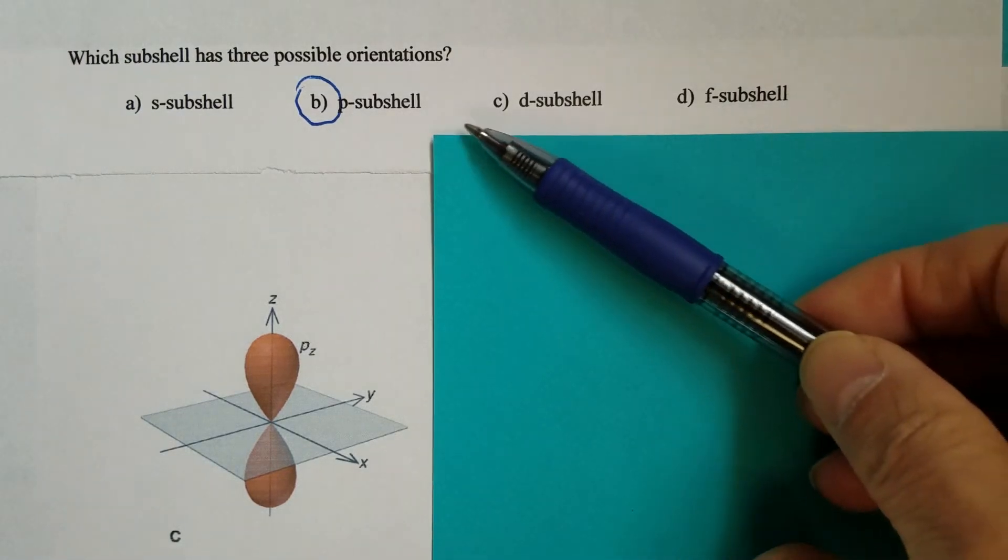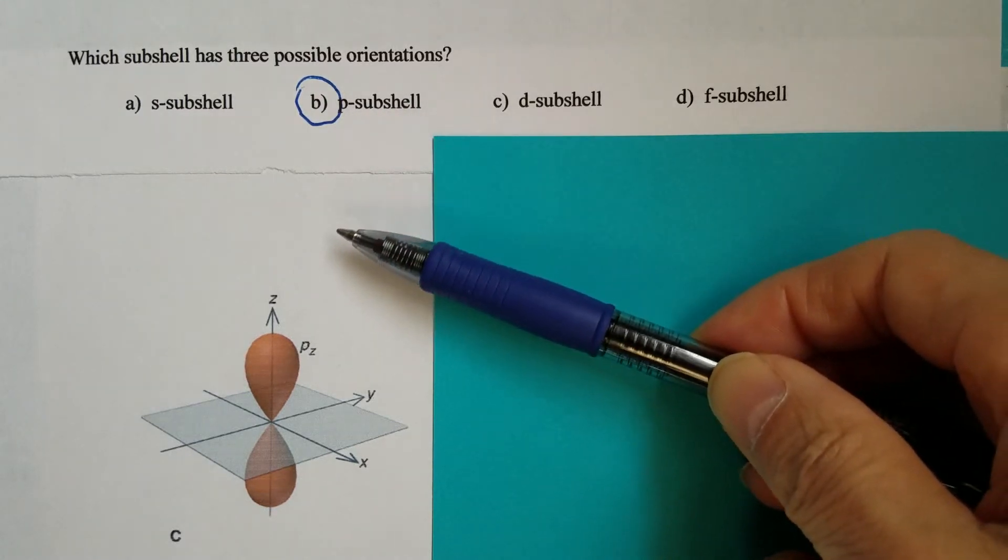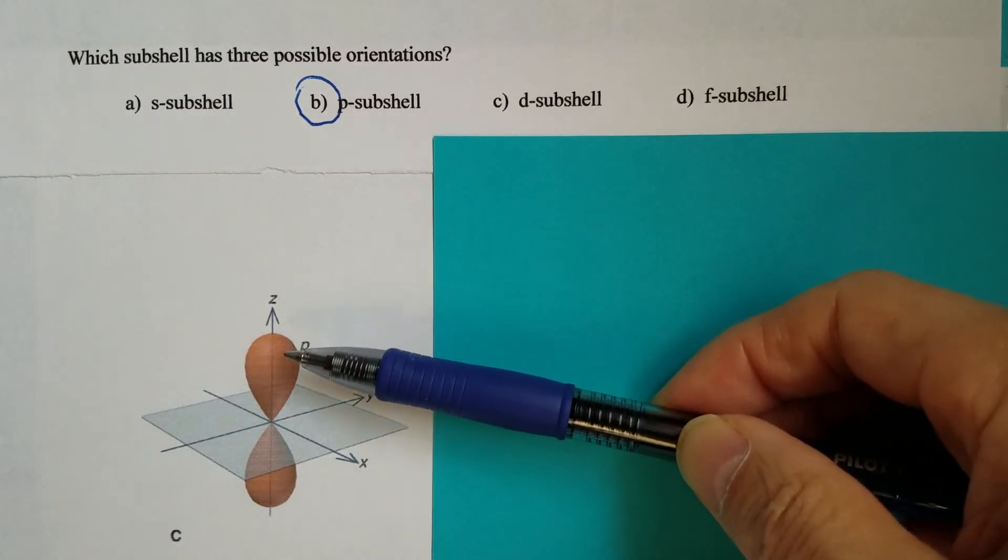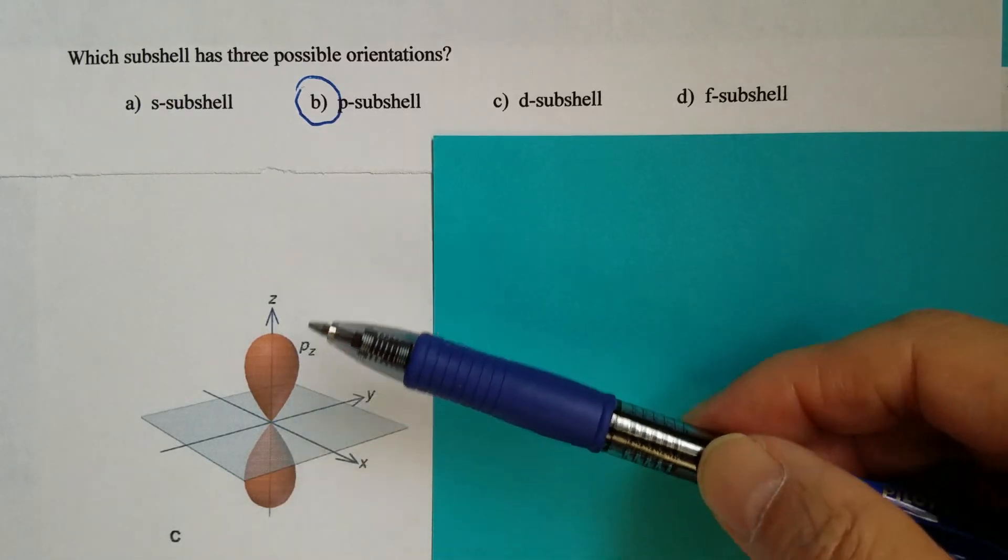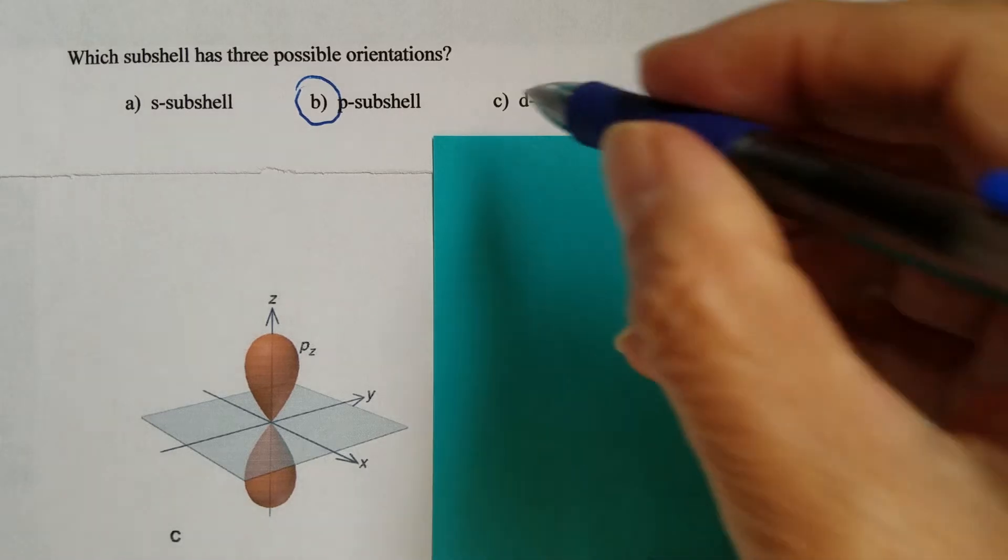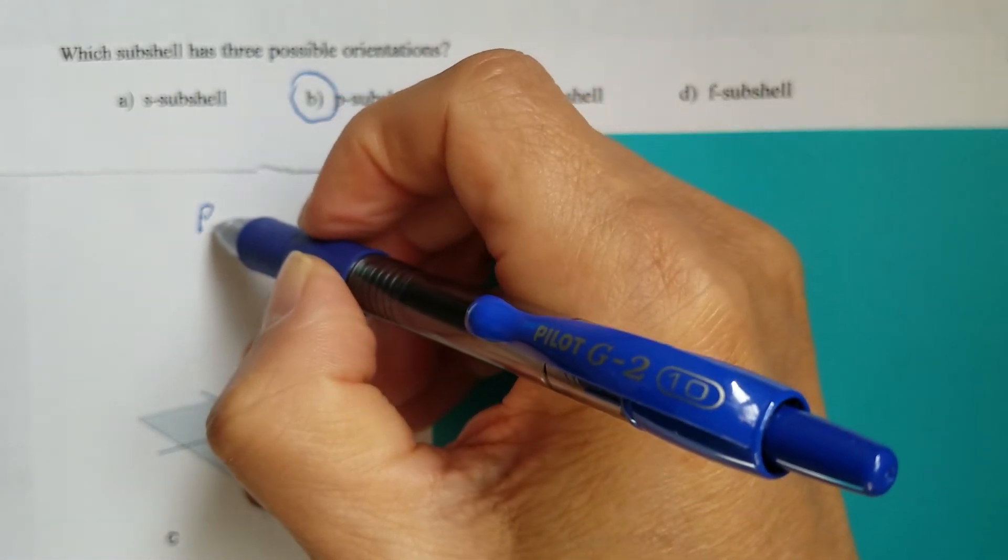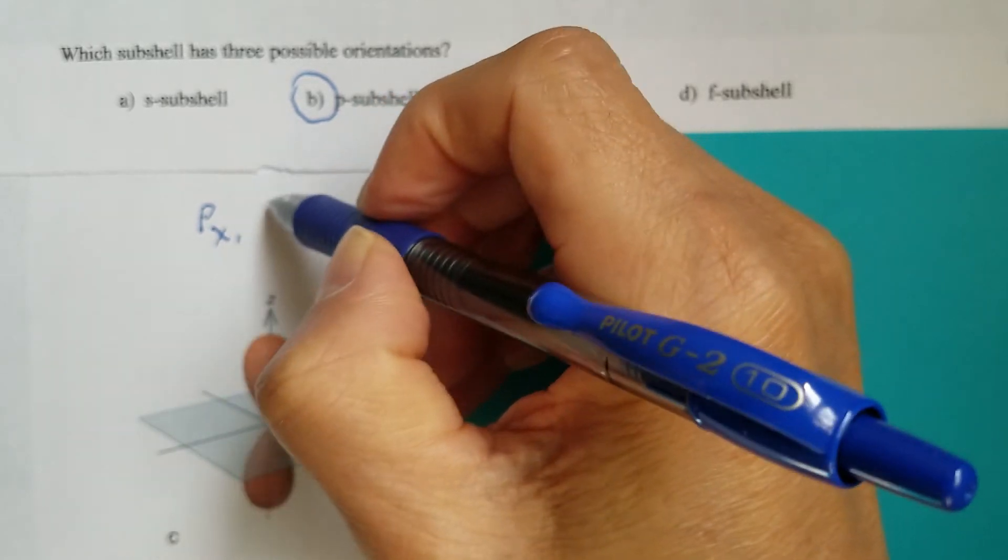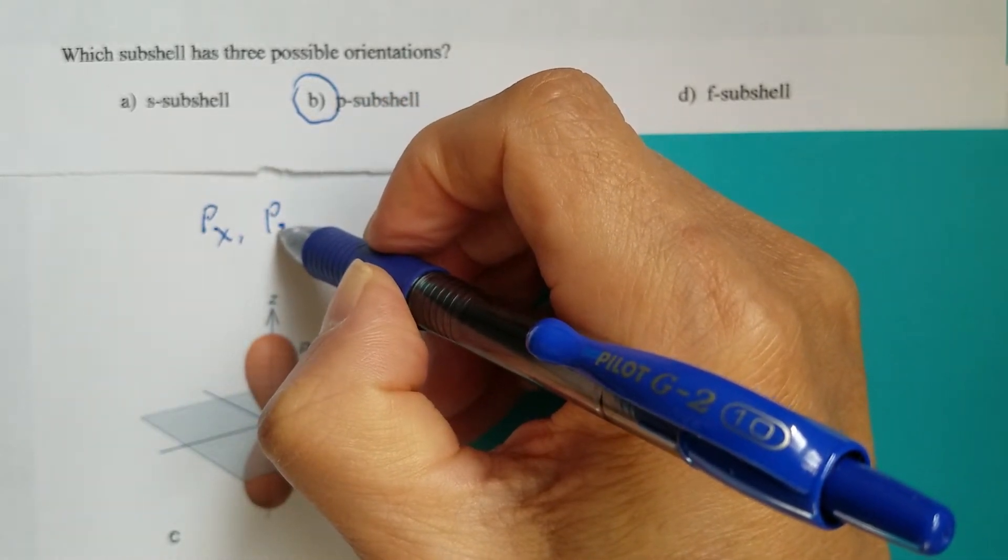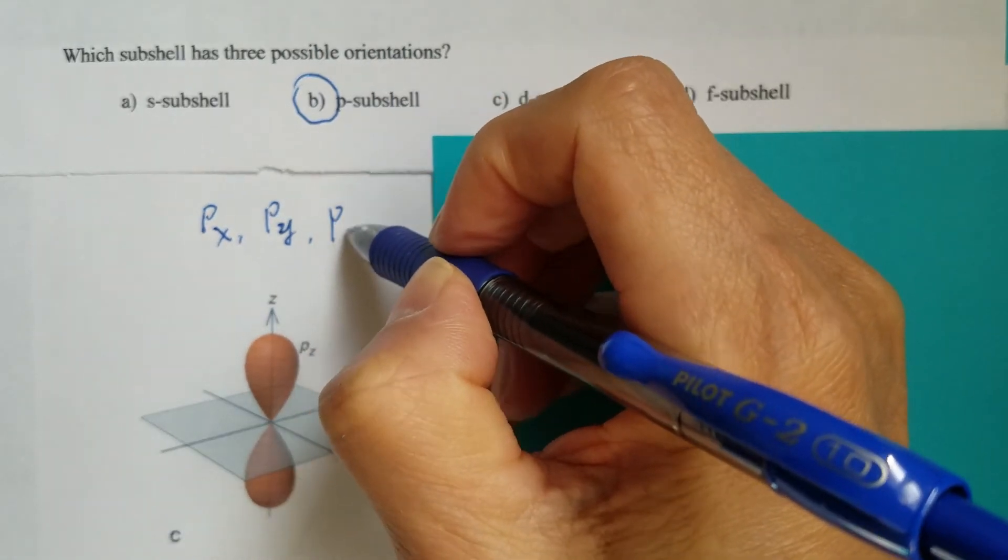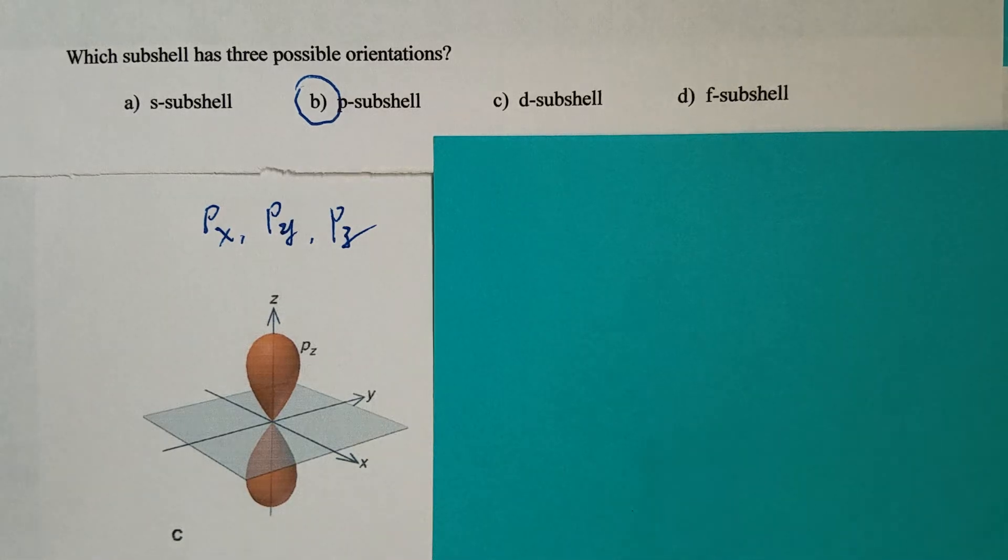So now we know it has to be the p-subshell. But let's take a closer look at the three possible orientations. We know, of course, the three p orbitals: one is Px, Py, and Pz.